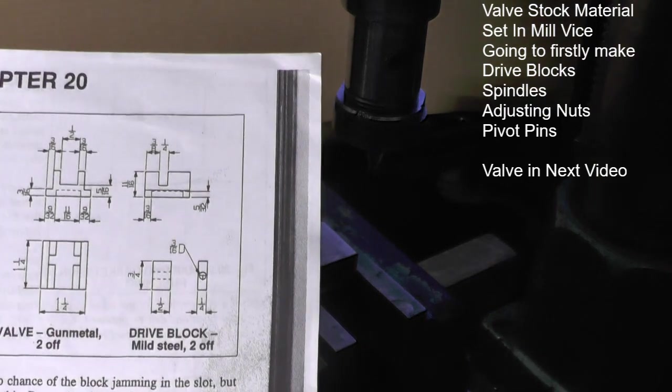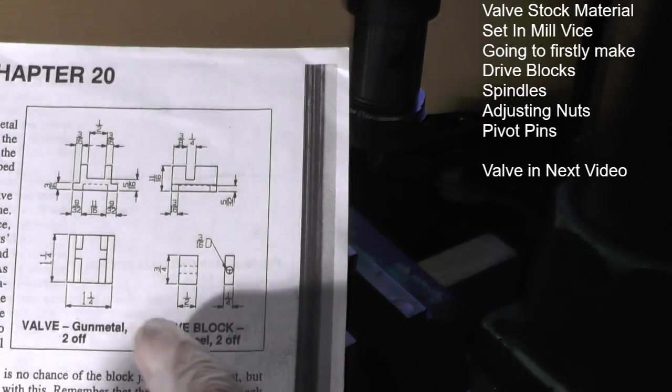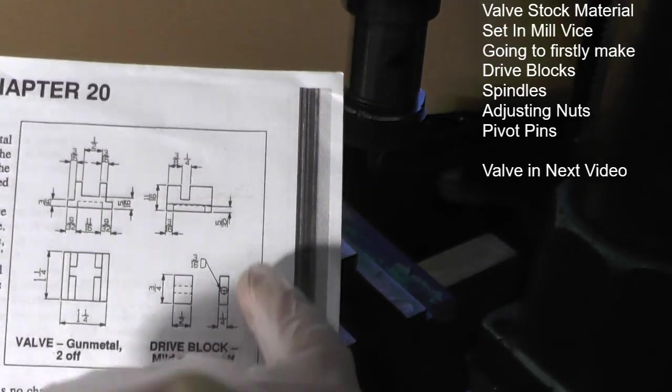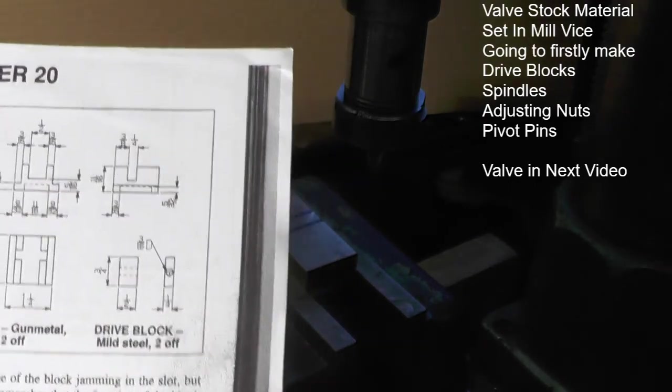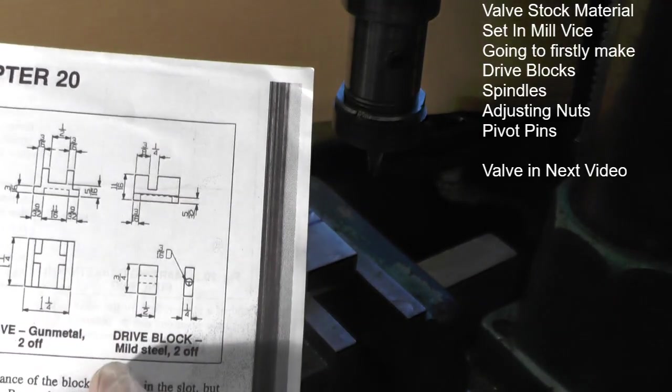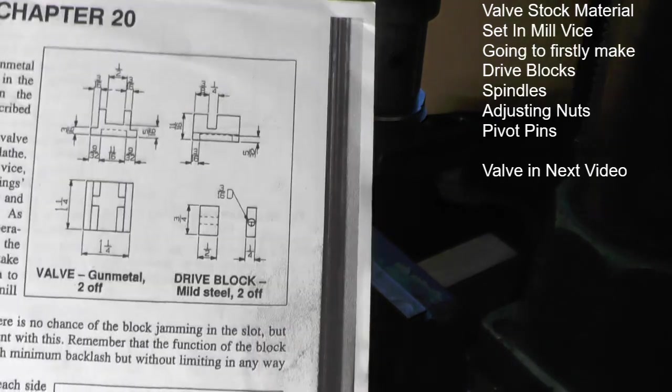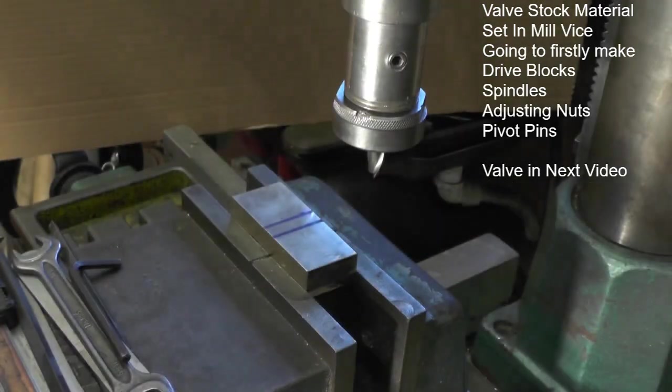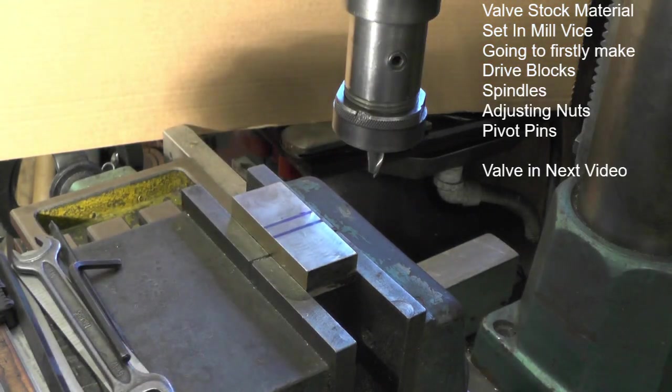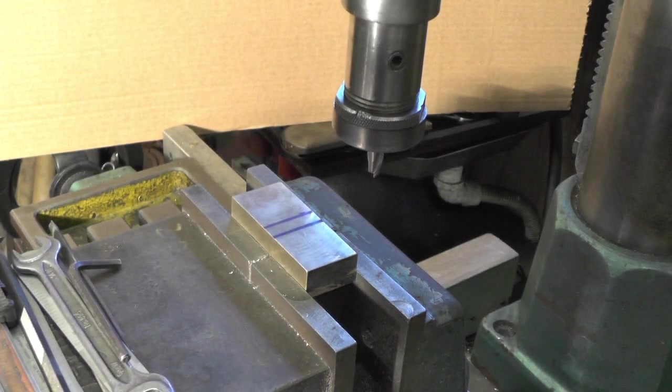I'm just going to make these two little drive blocks first, and all they are is, it says mild steel on the actual drawing, but I'm not going to use mild steel because at the end of the day they're in water and steam all the time. So I found this little bit of stainless and I've cut two pieces off to the relevant dimensions which is three quarter by half inch by a quarter.